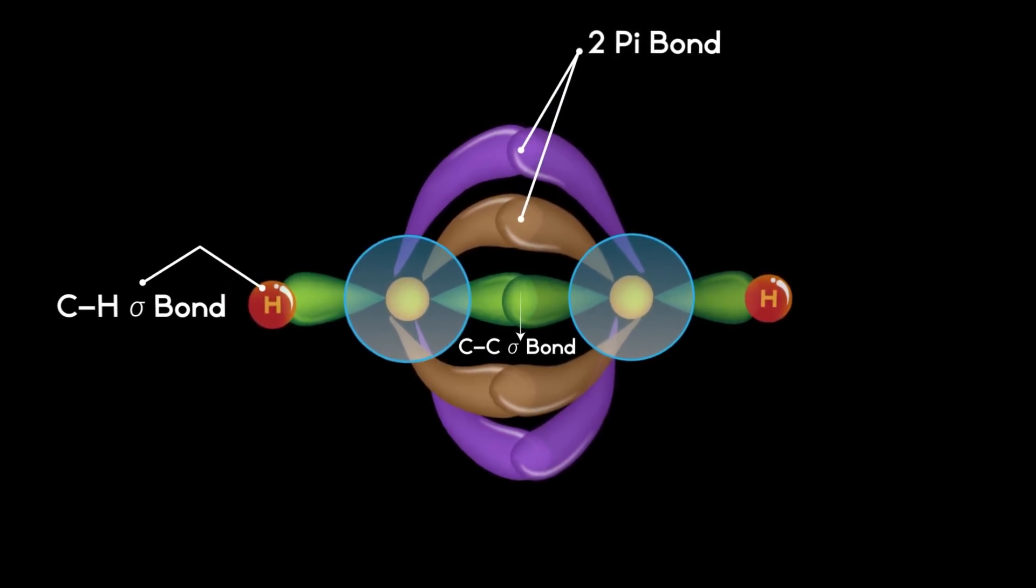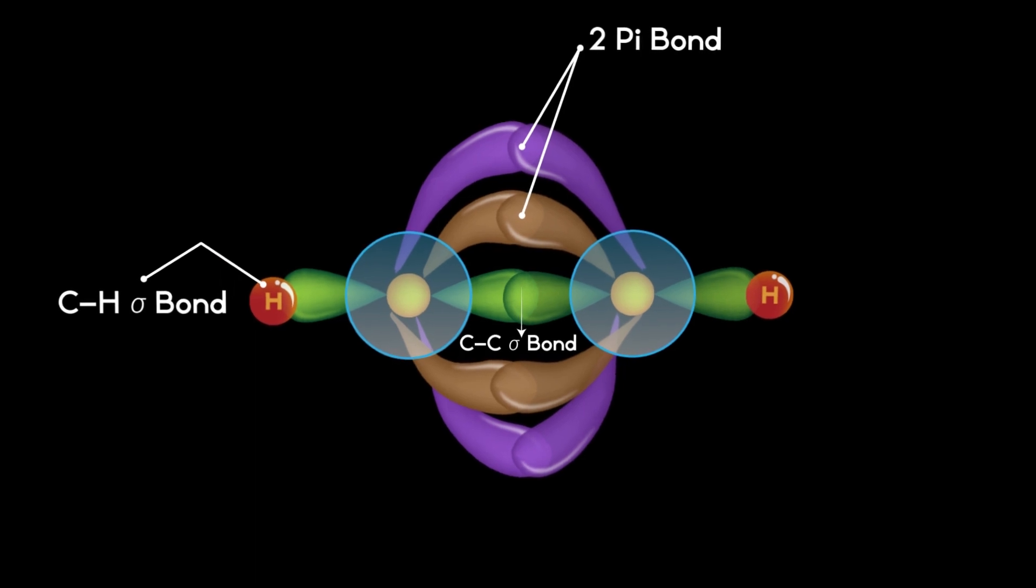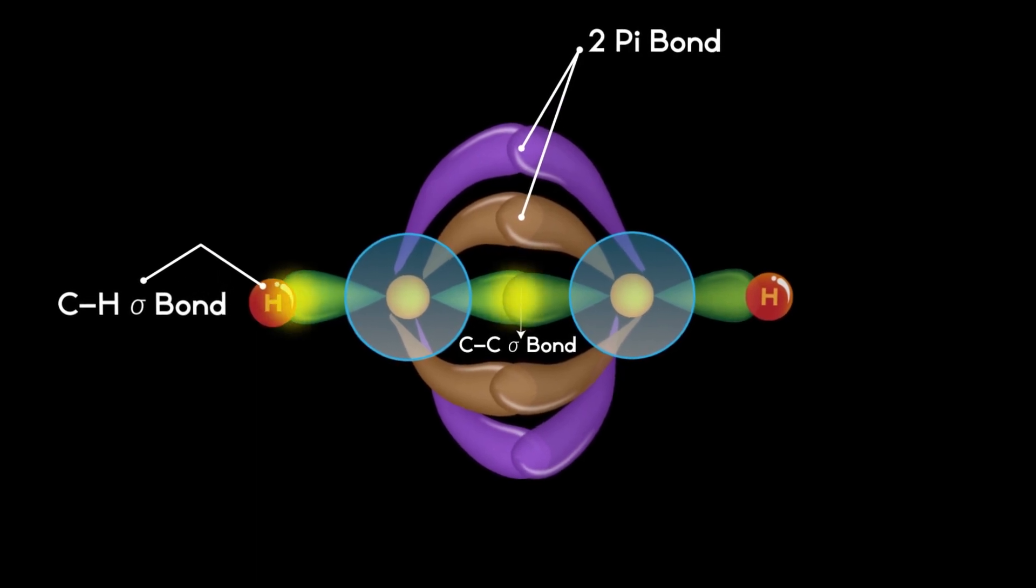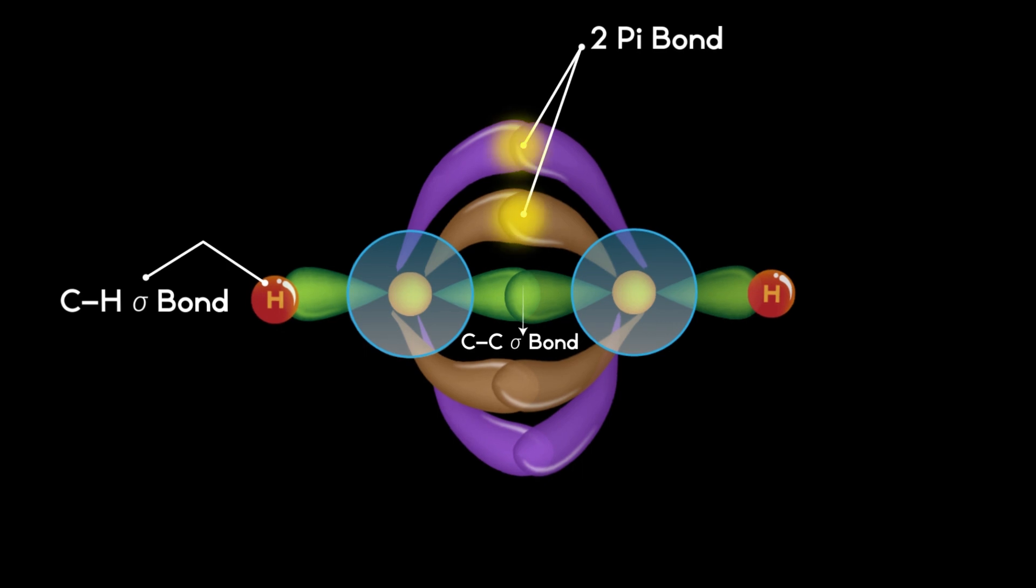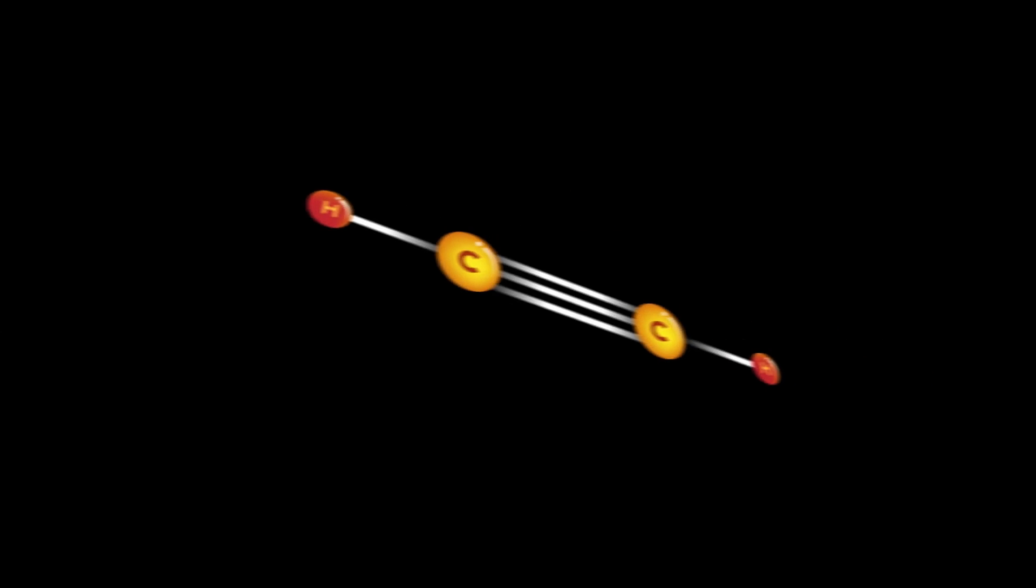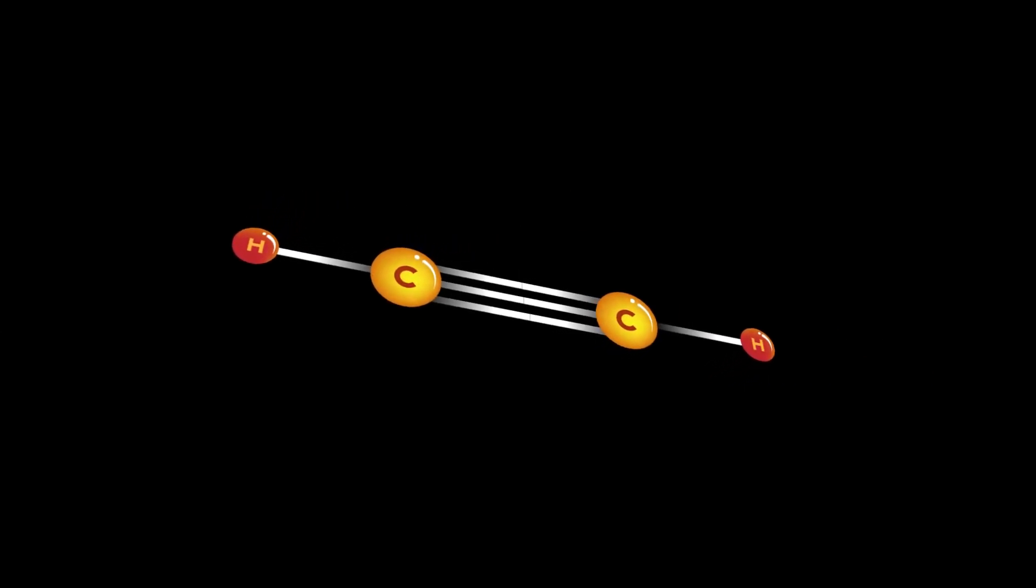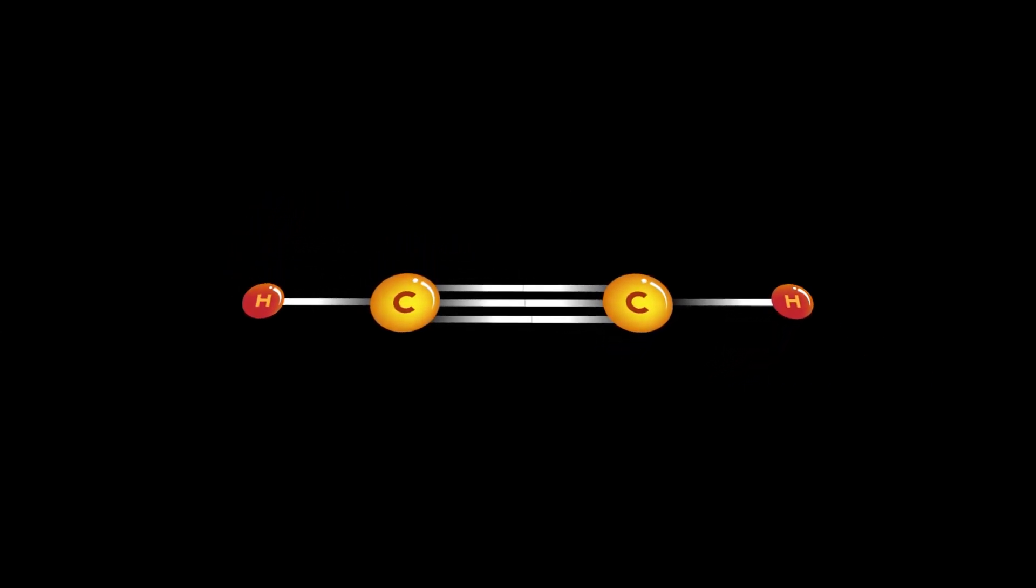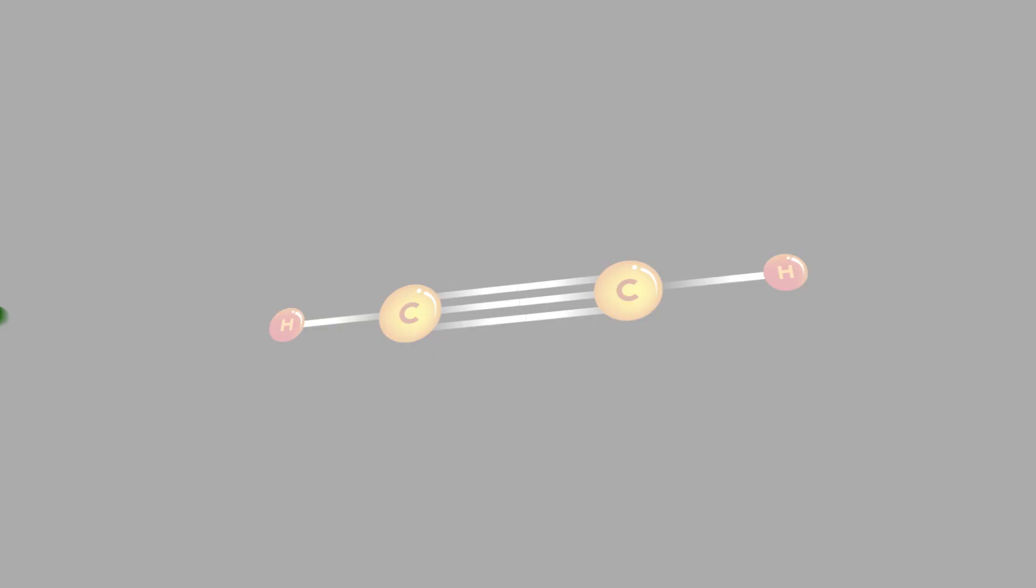Hence, in sp hybridization, two sigma bonds and two pi bonds are formed. This hybridization results in the formation of acetylene molecule.